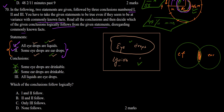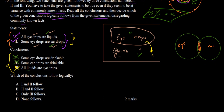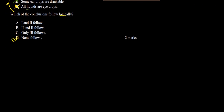Conclusion 3 says: all liquids are eye drops. But from the Venn diagram, some liquids fall outside the eye drops circle, so not all liquids are eye drops. This conclusion also cannot be derived from the statements. Since none of the three conclusions follow logically from the two given statements, the answer is option D — none follows. This completes solving the ACET September 2019 question paper.